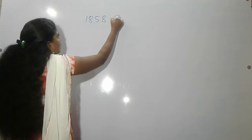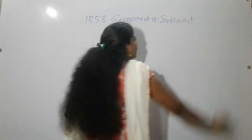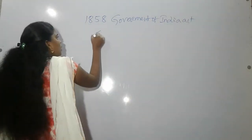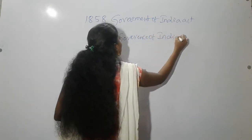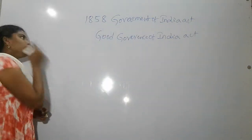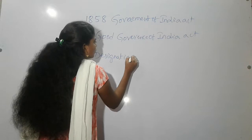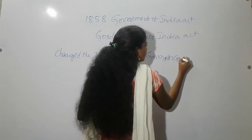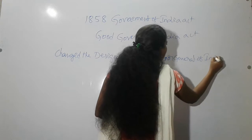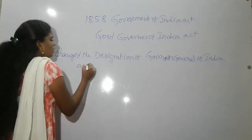Good evening. Today I am going to discuss the 1858 Government of India Act, which is also known as the Good Governance of India Act. This Act changed the designation of Governor General of India to Viceroy of India.